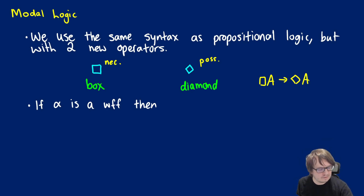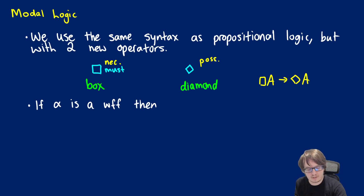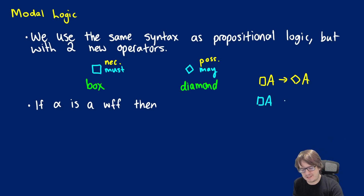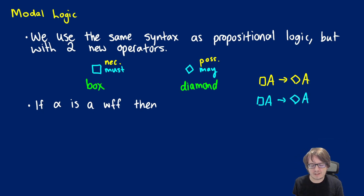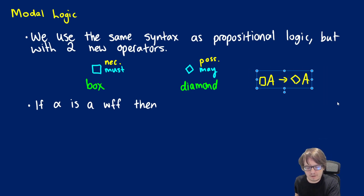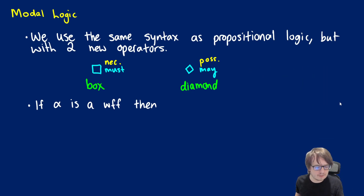You could also think of these in a different way — the box meaning 'must' while the diamond means 'may' — so necessity versus permission. In that case, it might not make sense to say that if it's necessarily A then it's possibly A. Not all of the theorems will make sense in every system, depending on what you're looking at or studying.